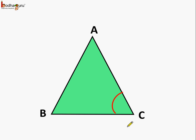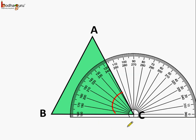Now let us measure angle C. Using a protractor, angle C is also equal to 63 degrees. Starting from 0 degrees: 10, 20, 30, 40, 50, 60, 61, 62, 63 — so angle C is equal to 63 degrees.